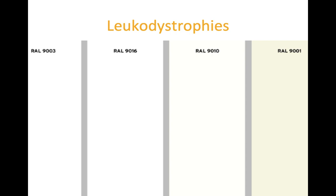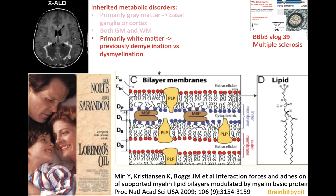We're going to talk about leukodystrophies in general. As the name implies, there's something wrong with the development of white matter. On MR imaging, leukodystrophies have symmetrical involvement of the white matter. When you think of inherited metabolic disorders, you can classify them as primarily grey matter involvement — for example with the basal ganglia in Leigh or the cortex in MELAS — or involvement of both grey and white matter, or a leukodystrophy with primarily white matter involvement.